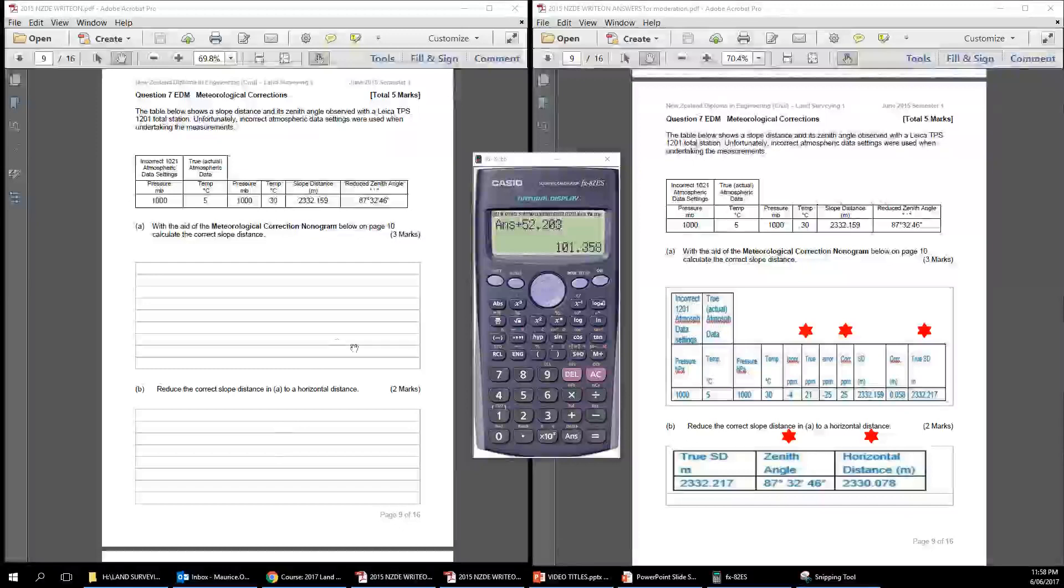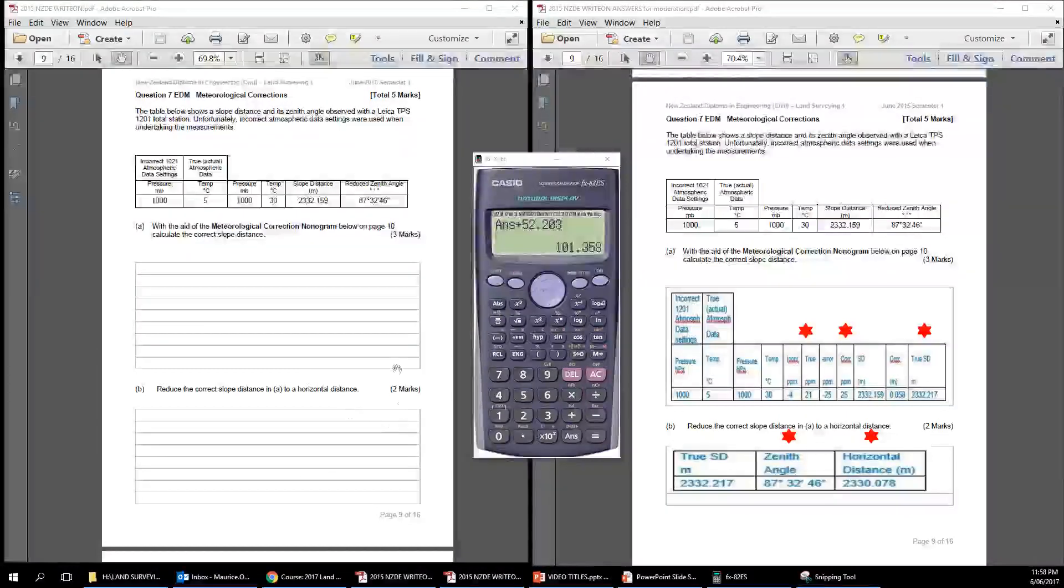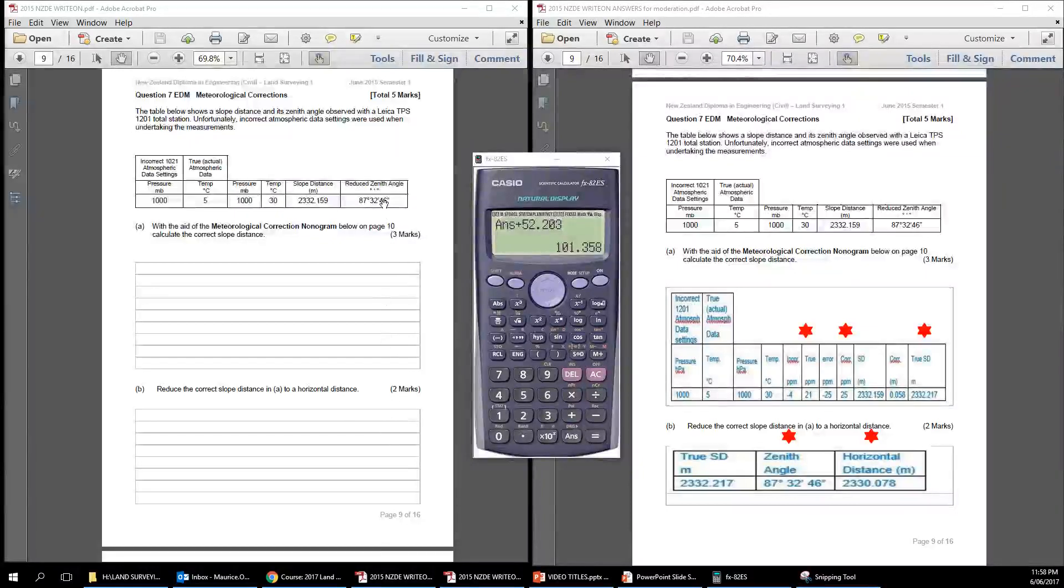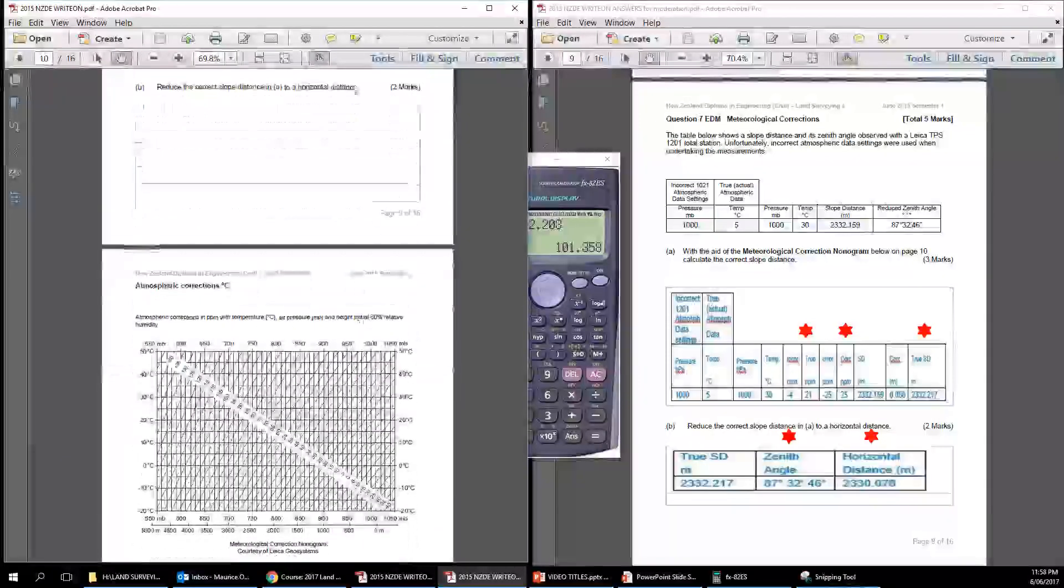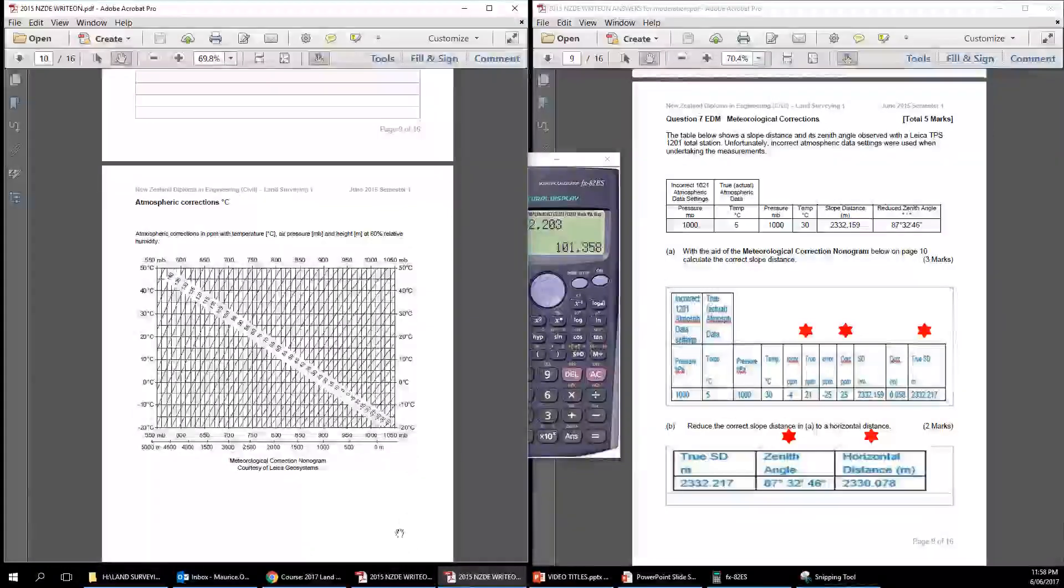So that's question A. Question B, reduce the correct slope distance in A to a horizontal distance. So this question depends, the answer in B depends on the question in A. So you just need to make sure that you get it right in A because it could have implications further down the track. And here is the so-called nomogram.